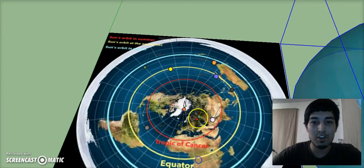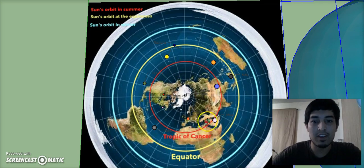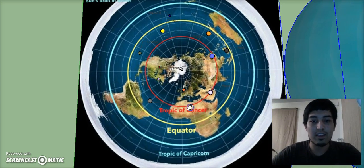This is how I believe that works. And of course, you have the summer orbit along Cancer, and then equinox, equinoxes orbits along the equator, and the winter orbit along Capricorn.